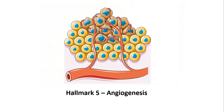Cancer cells have uncontrolled proliferation and the capacity to alter their metabolism, but they cannot continue like this forever because they need nutrients coming from blood. To fulfill this requirement, they develop the capability to recruit new blood vessels, and this process is called angiogenesis, which is the next hallmark of cancer.